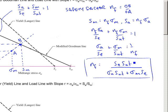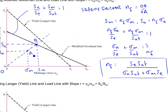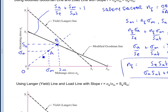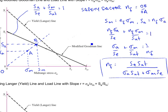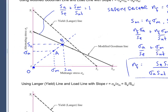Plug and chug — that formula comes from how far your design point is from the Goodman line. When you increase your load and move along the load line, if you hit the Goodman line first, fatigue will occur before yield.